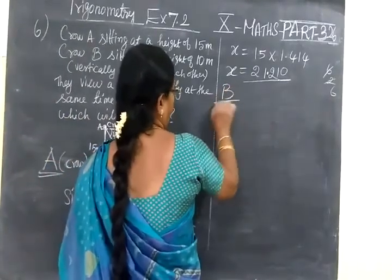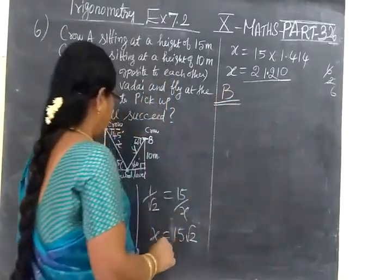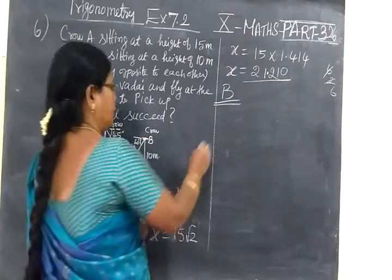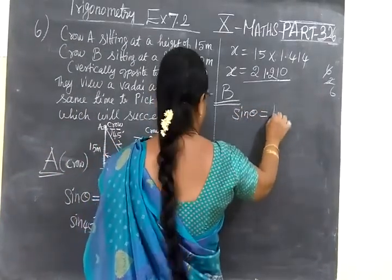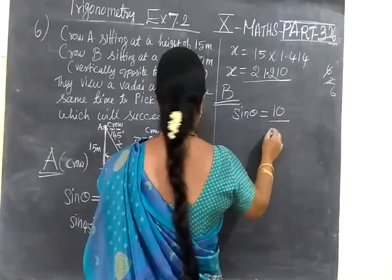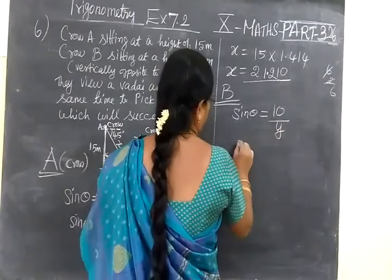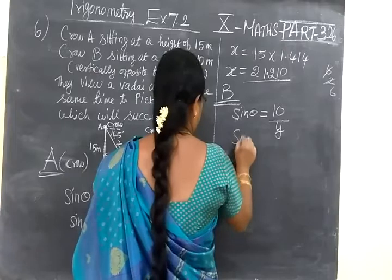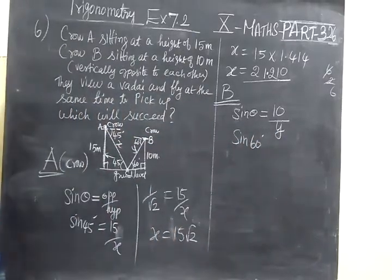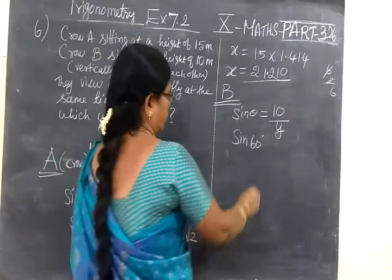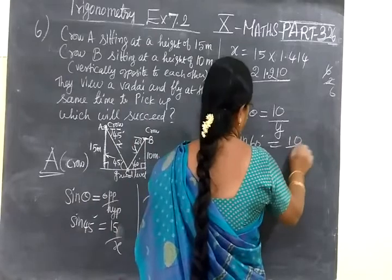Now come to Crow B. For this also we are taking sin theta. Sin theta equals opposite side 10 by hypotenuse Y. Then sine 60 degrees.